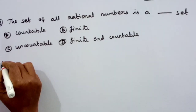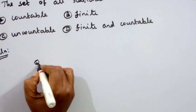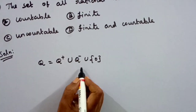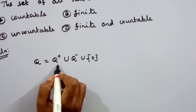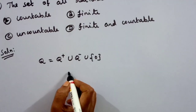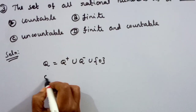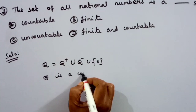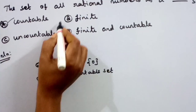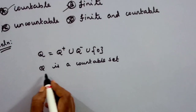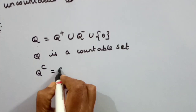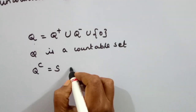We will discuss the solution. The set of all rational numbers Q equals the set of all positive rationals, union the set of all negative rationals, union {0}. The set of all positive rational numbers is countable, and the set of all negative rational numbers is also countable. The union of countable sets is countable. Therefore, Q is a countable set. Option A, countable, is correct.